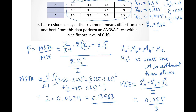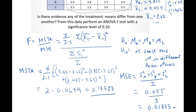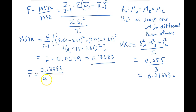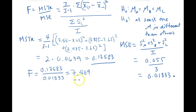Now I have the two values needed to calculate my F test statistic. F equals the mean squared treatment, 0.13583, divided by the mean squared error, 0.01833, giving an F test statistic of 7.409.